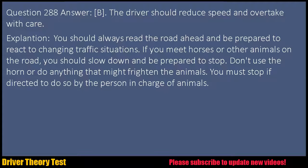Question 288 Answer: B. The driver should reduce speed and overtake with care. Explanation: You should always read the road ahead and be prepared to react to changing traffic situations. If you meet horses or other animals on the road, you should slow down and be prepared to stop. Don't use the horn or do anything that might frighten the animals. You must stop if directed to do so by the person in charge of animals.